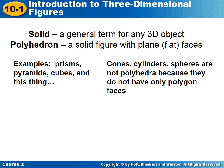Some examples of polyhedrons would be prisms, pyramids, cubes, and this thing right here.